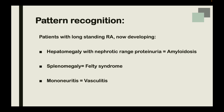If you see a patient with long-standing rheumatoid arthritis now developing hepatomegaly and a nephrotic range proteinuria, the question is probably asking about amyloidosis. Similarly, splenomegaly with bone marrow suppression is Felty syndrome, and a mononeuritis will point towards vasculitis.